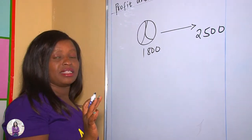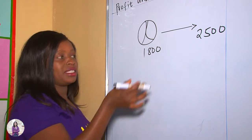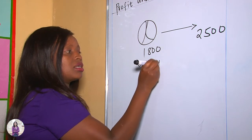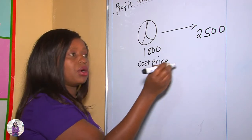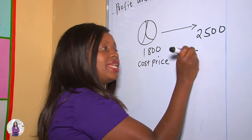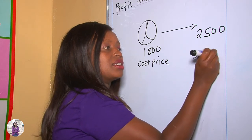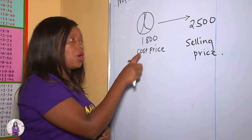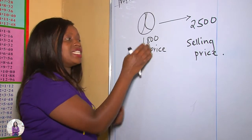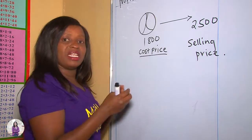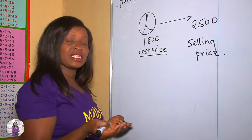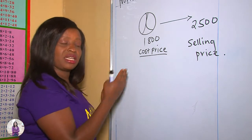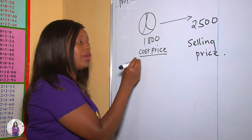Here, there are two terms. There's a term called cost price and there's a term called selling price. According to this example, $1,800 is the cost price, meaning that cost price entails all the expenditures that you incur when purchasing something. So cost price could be the buying price.